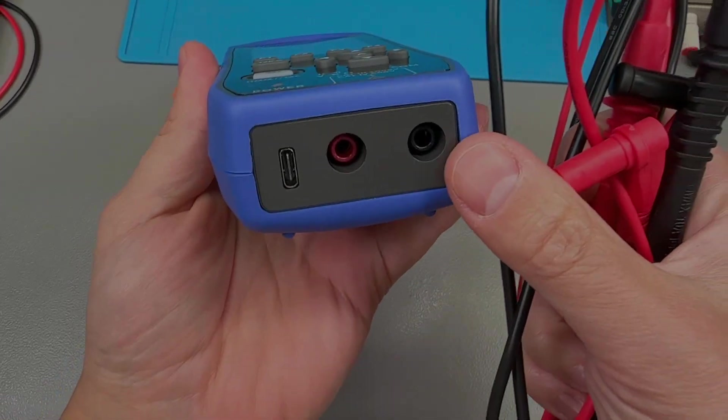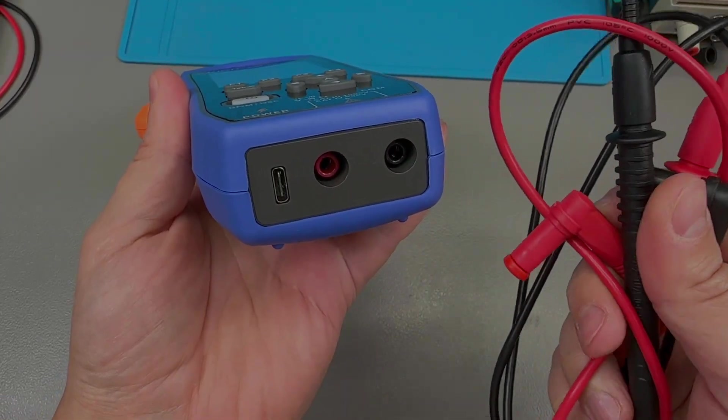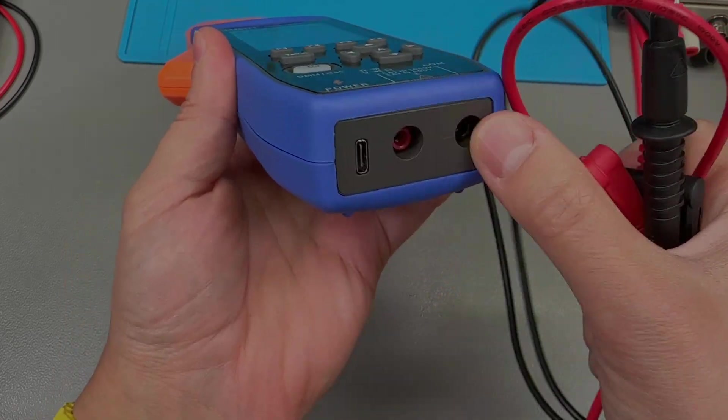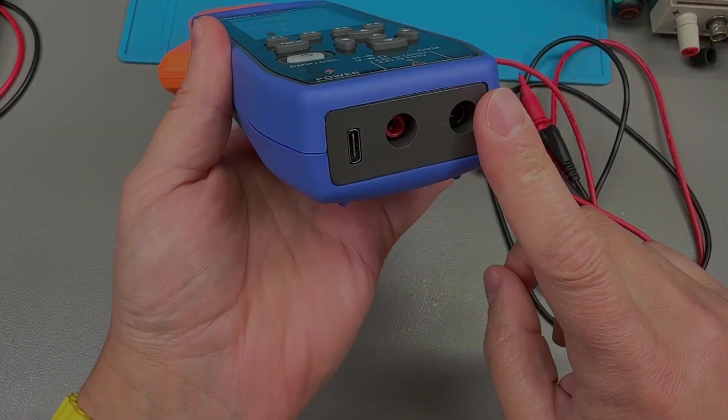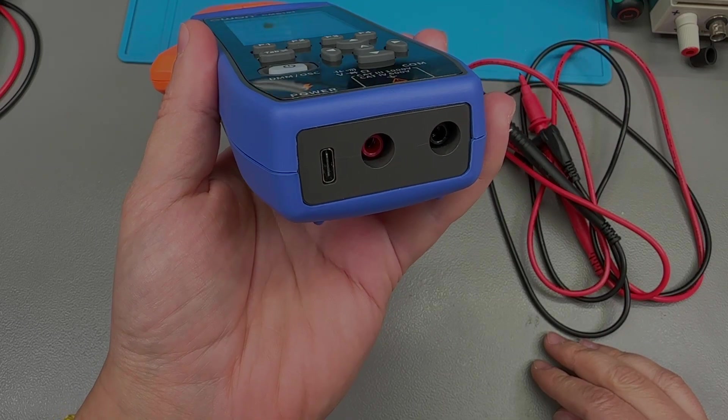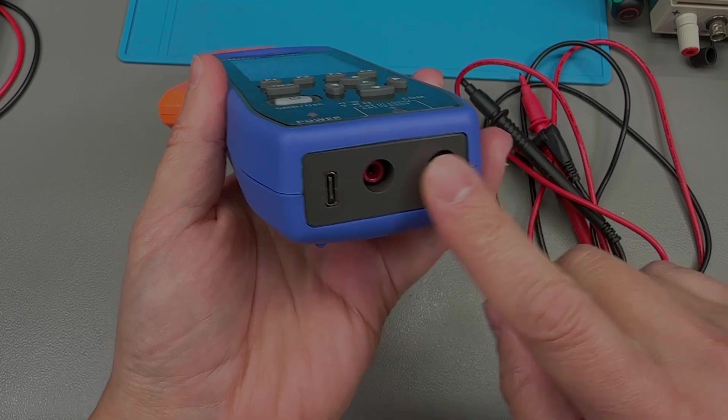On the bottom we get this set of banana jacks for the multimeter functionality and the USB connection which is right next to those. Feels very concerning to me.